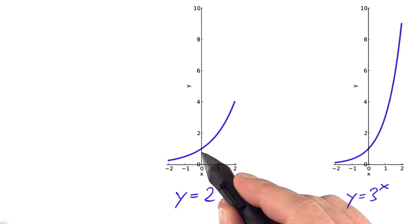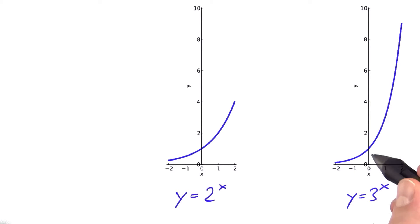So now that we know that the slope of 2 to the power of x at x equals 0 is slightly less than 1 and the slope of 3 to the power of x at x equals 0 is slightly larger than 1,